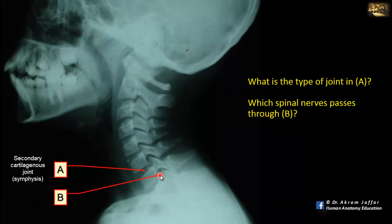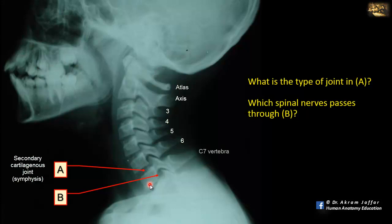B is an intervertebral foramen. You can see the other intervertebral foramina here as well. The intervertebral foramina transmit the spinal nerves. In the cervical region, there are seven cervical vertebrae: the atlas, axis (C2), then C3, C4, C5, C6, and C7 — the vertebra prominens.